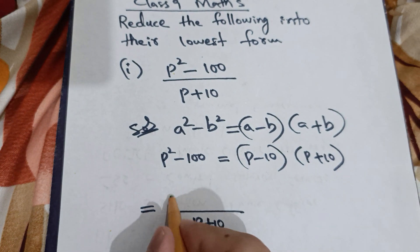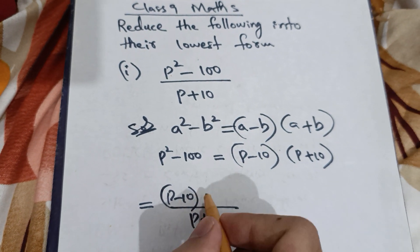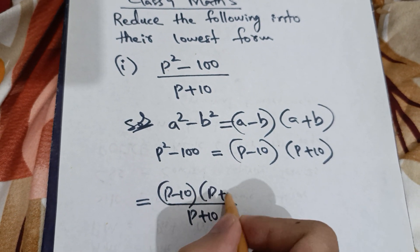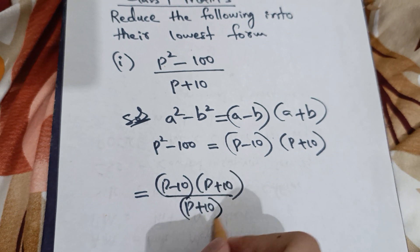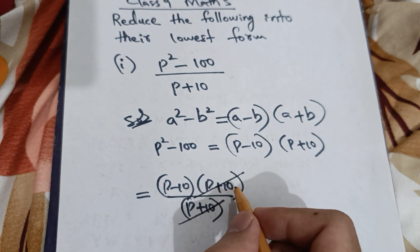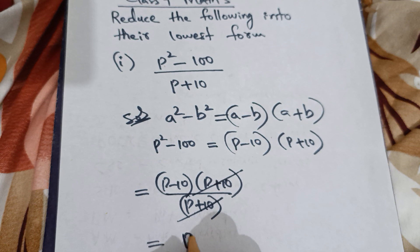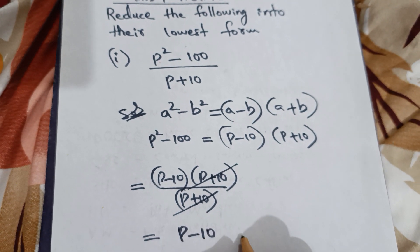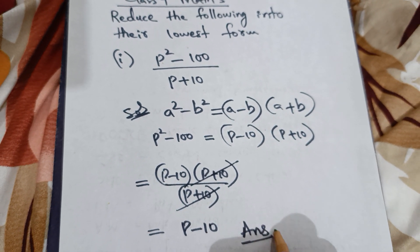The p plus 10 in the numerator will be cancelled with the p plus 10 in the denominator, and we are left with p minus 10. That's your answer.